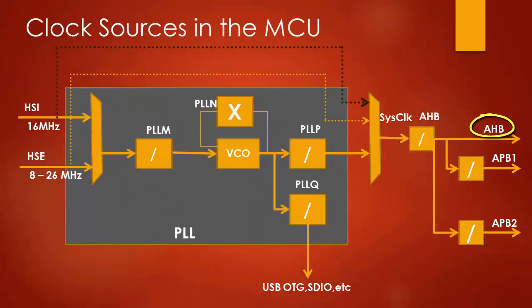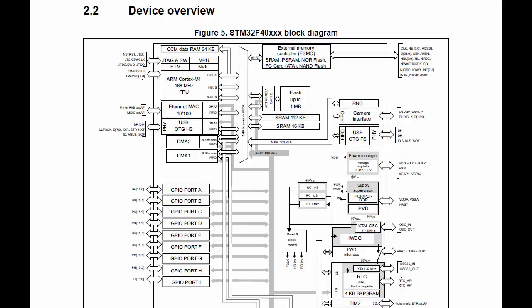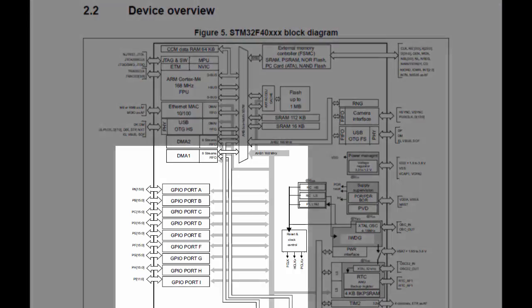All the peripherals connected to the HB bus will be powered by this clock. That's the reason the peripherals connected to this bus are called high-speed peripherals. Our GPIO ports are connected to the HB1 bus, which means GPIOs are high-speed peripherals.